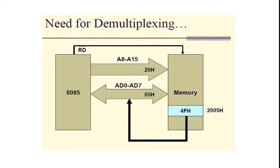Good morning everyone. Today we will try to understand the need for demultiplexing. In the last video we saw the special function registers. There are 4 types: the accumulator, the flag register, the program counter, and the stack pointer. The accumulator and flag register are 8-bit registers made up of 8 flip flops, whereas the program counter and stack pointer are 16-bit registers made up of 16 flip flops.